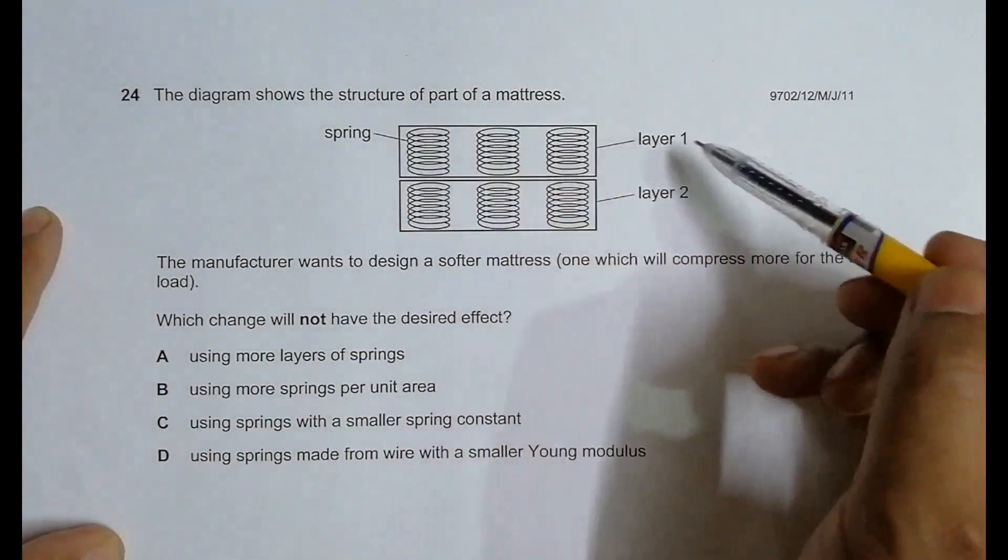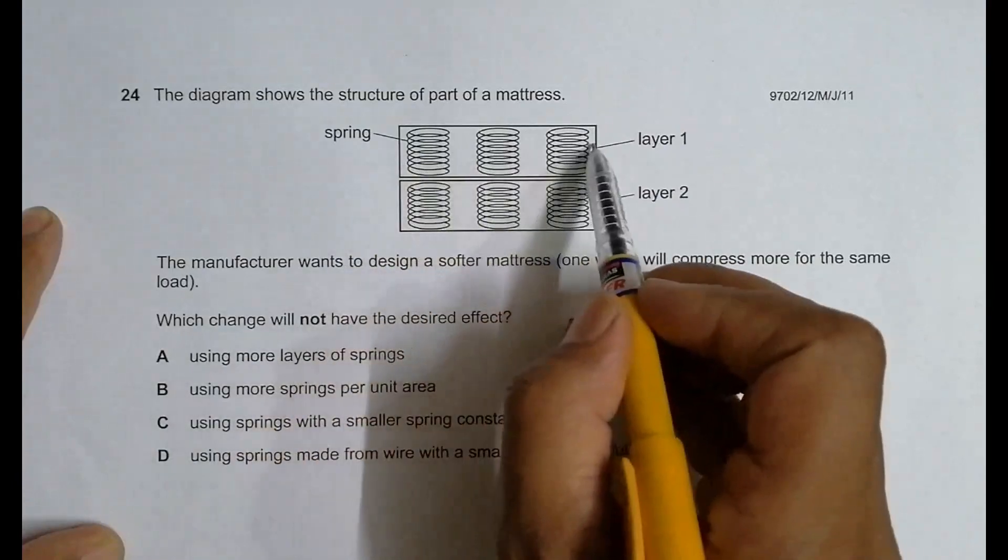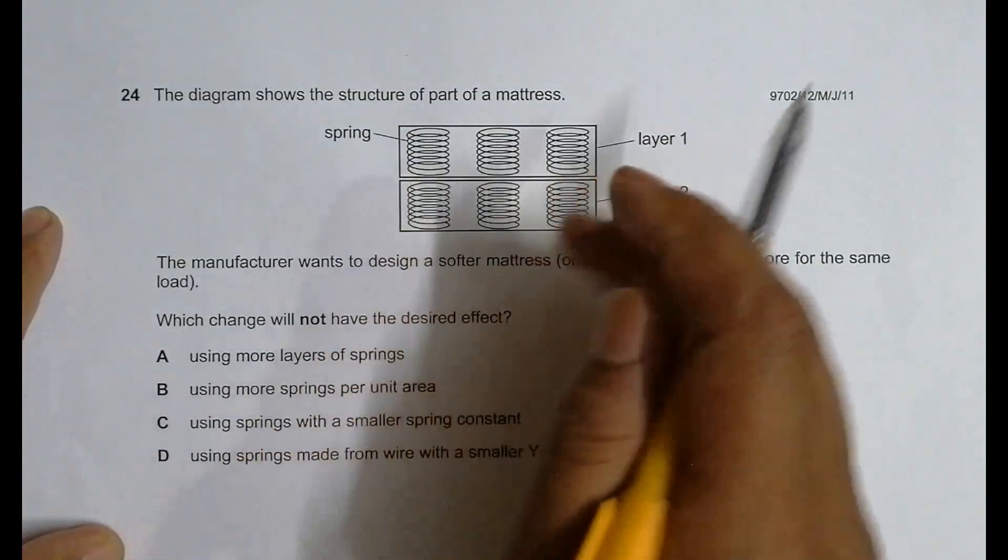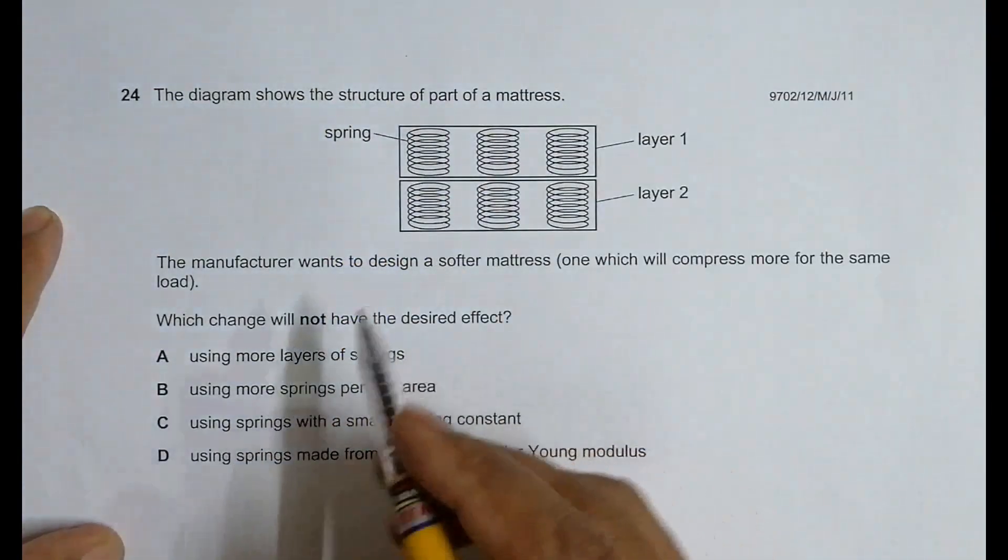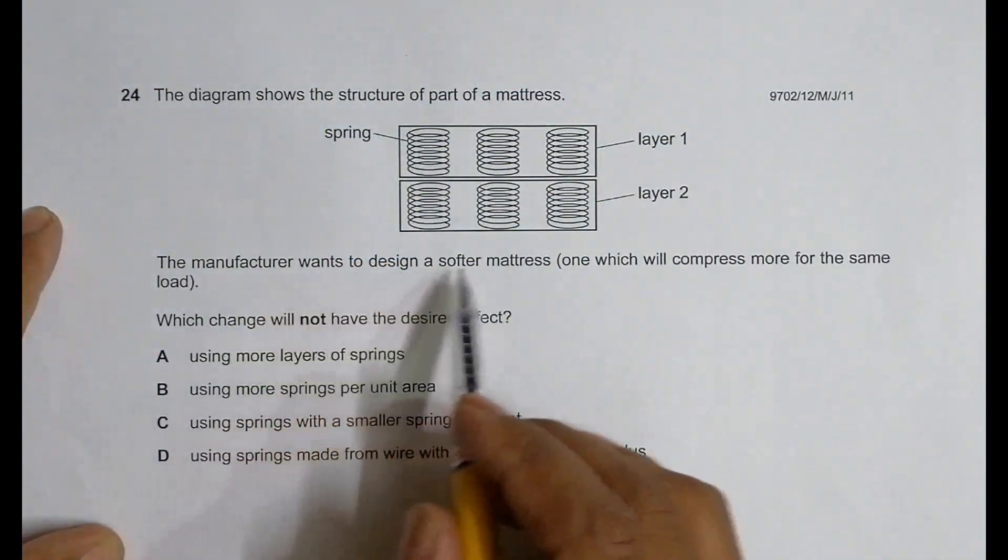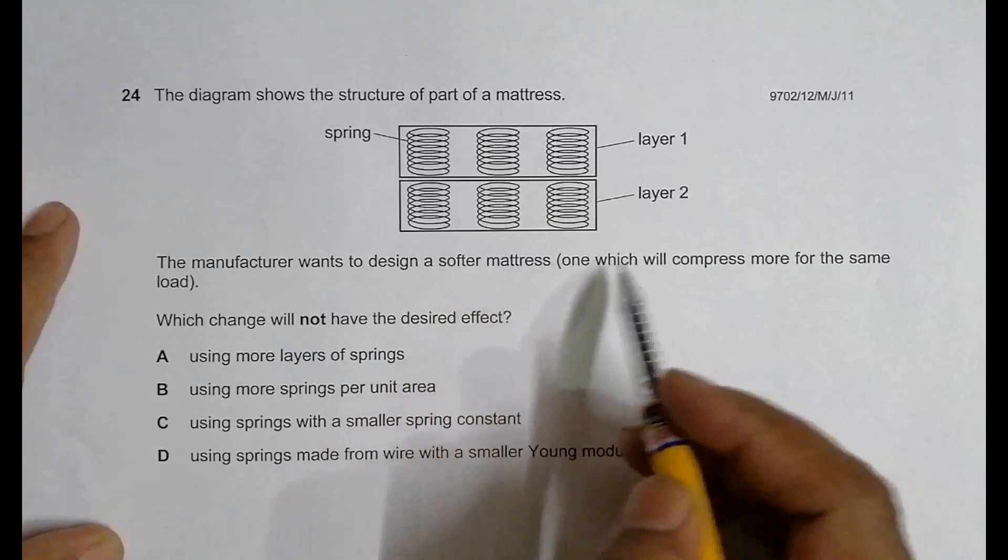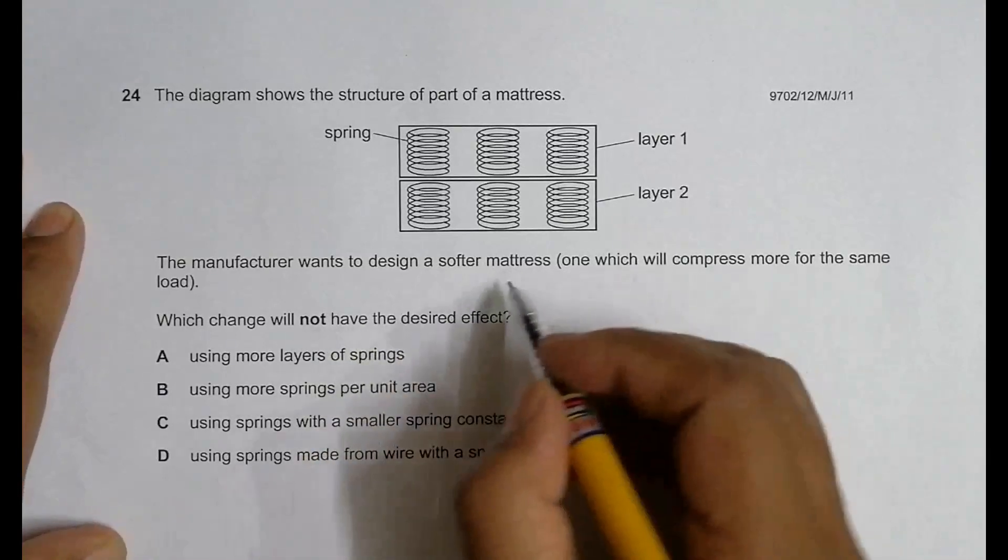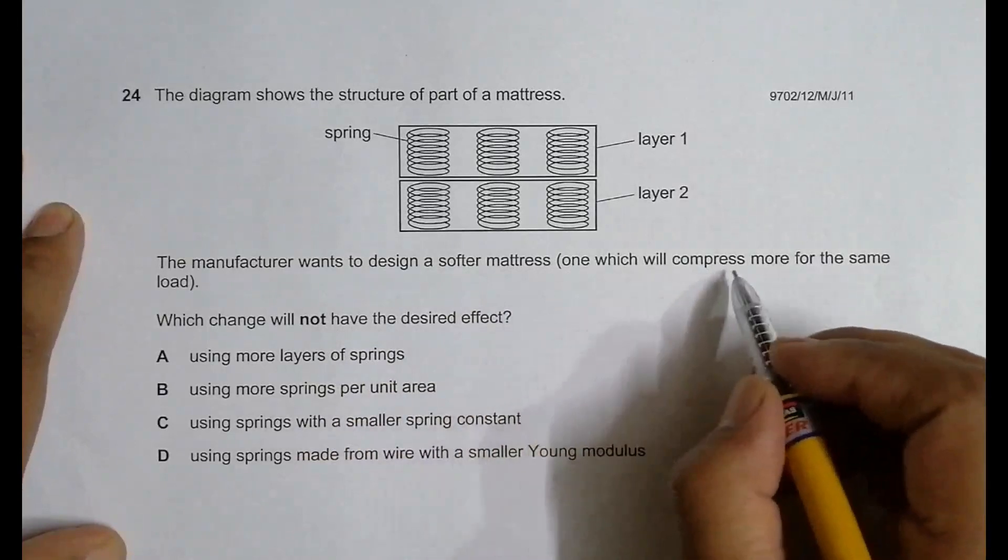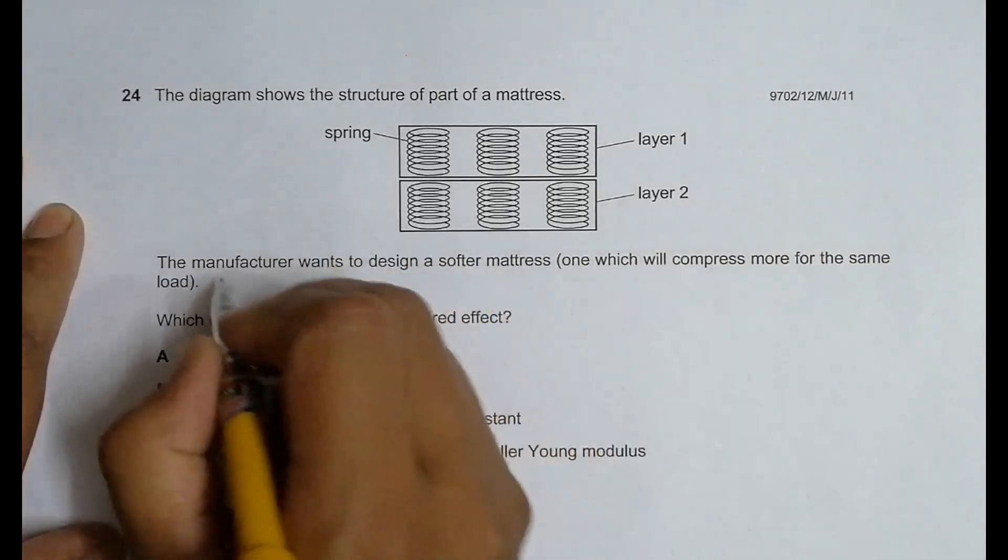The mattress is a large thing with several springs in parallel. These three things are in parallel, and this arrangement is in series with this arrangement. The manufacturer wants to design a softer mattress, one which will compress more for the same load.